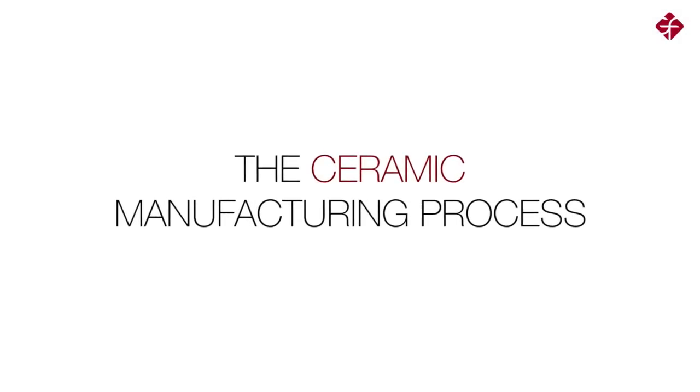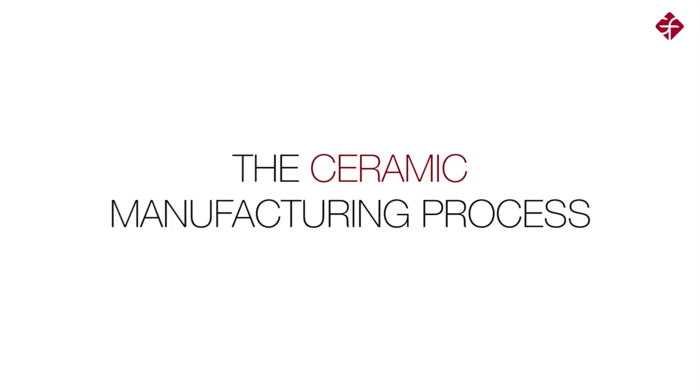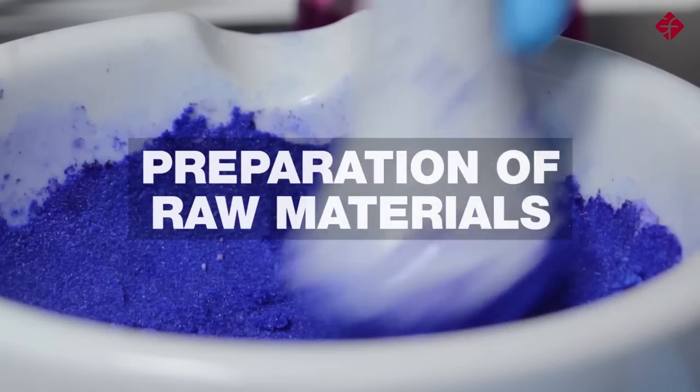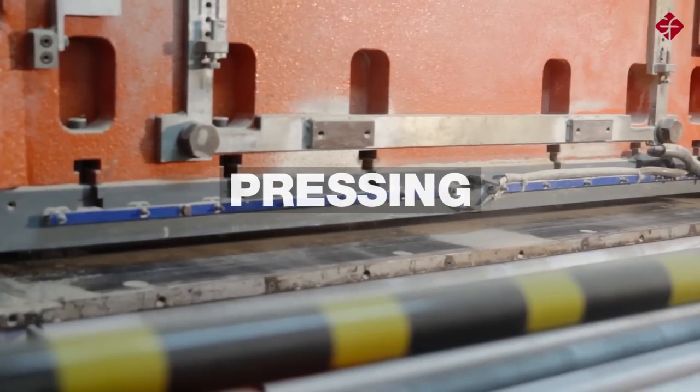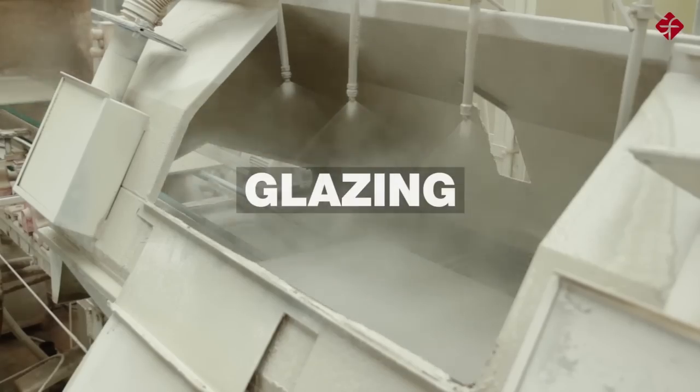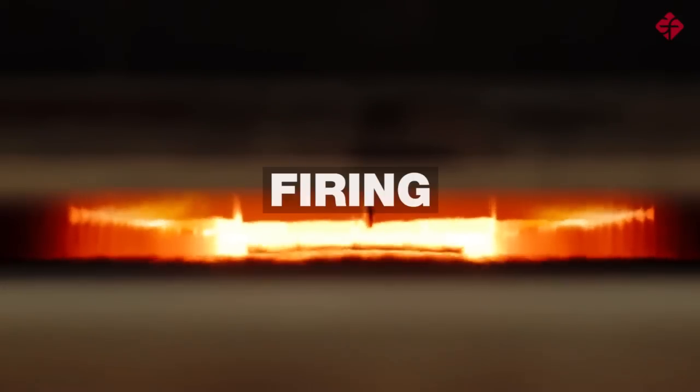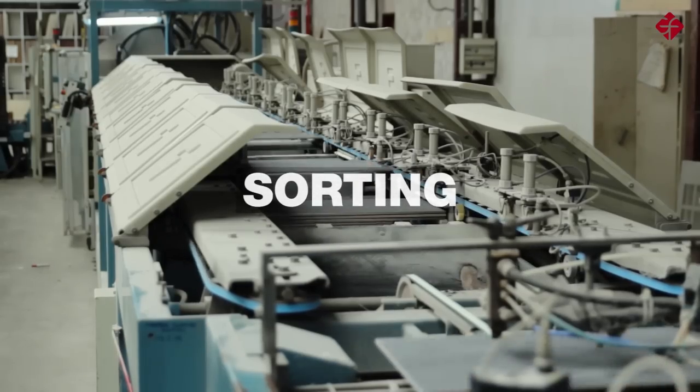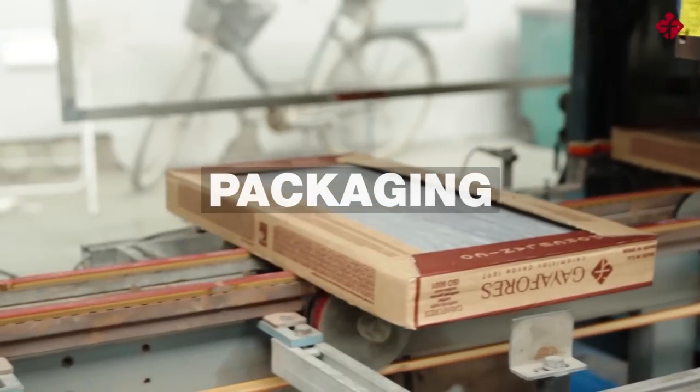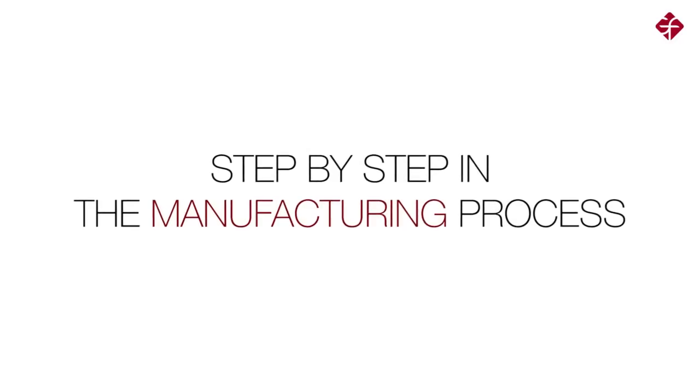The ceramic manufacturing process consists of the following stages: preparation of raw materials, pressing, glazing, firing, sorting, packaging. Step by step in the manufacturing process.